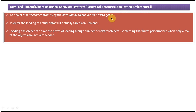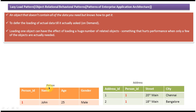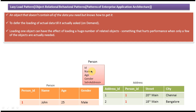To explain this, I have taken two tables: a person table and an address table. The person table has four columns — person ID, name, age, and gender — with one row representing John. The address table has four columns — address ID, person ID, street, and city — where person ID is a foreign key. This person has two addresses: Chennai and Bangalore.